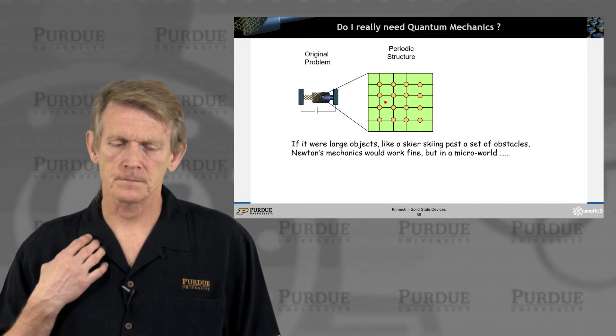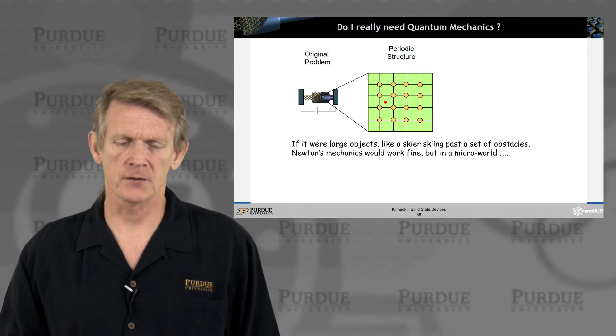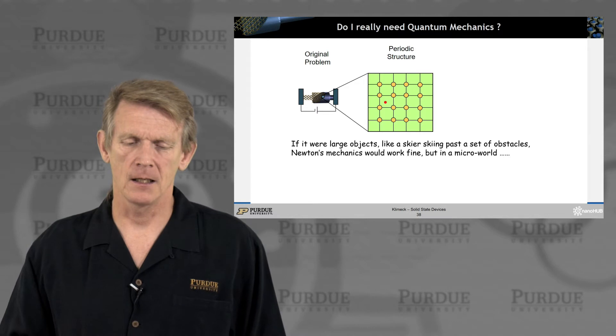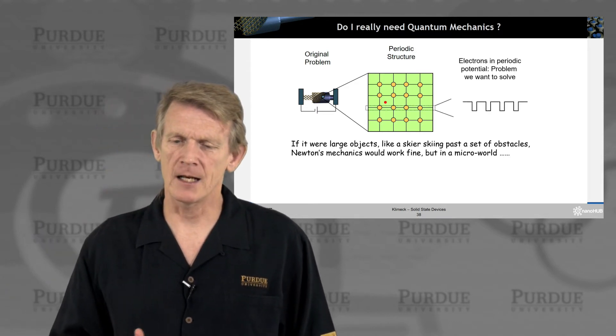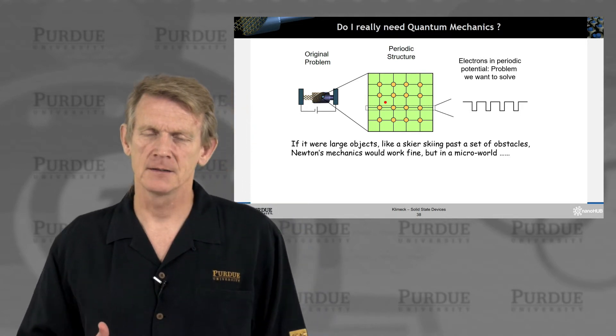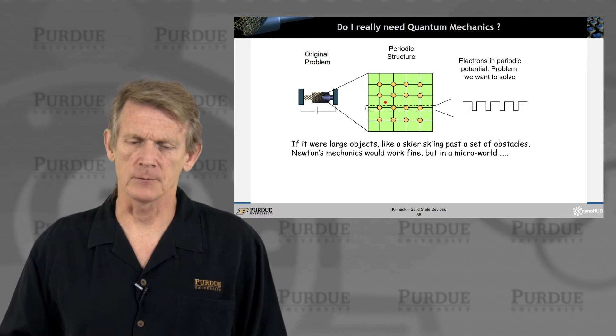If you had a classical particle moving through, like a skier or billiard balls, Newtonian mechanics would be fine. But really what an electron sees is a potential that is generated by the core of the atoms.